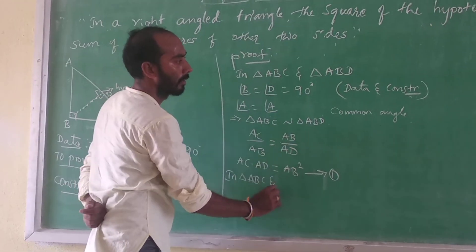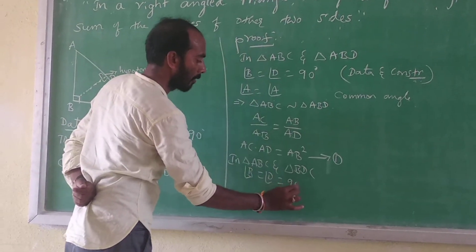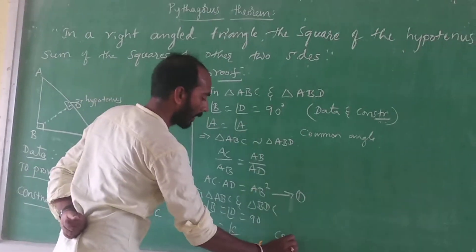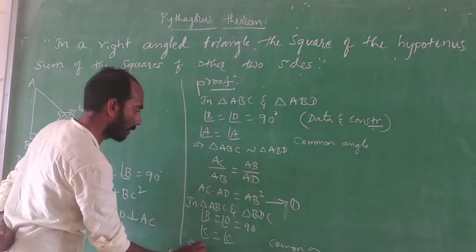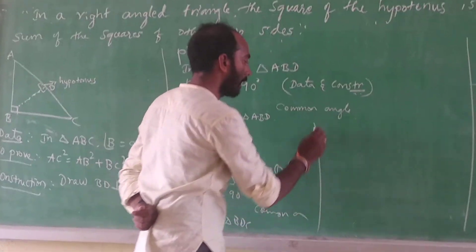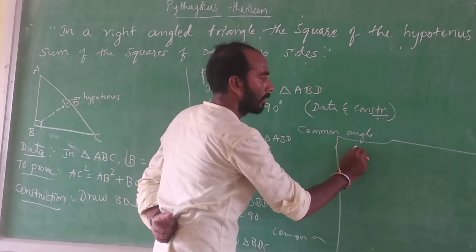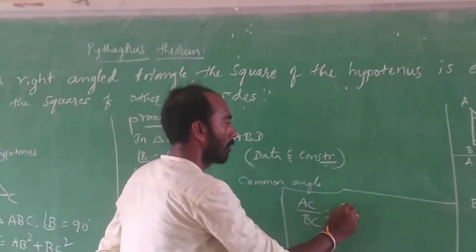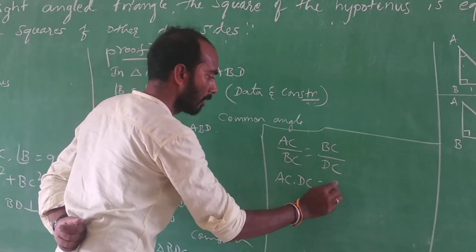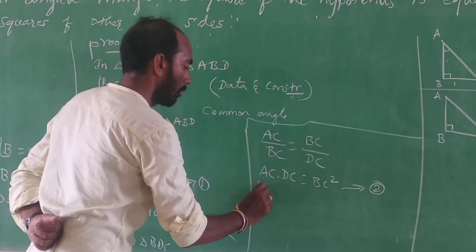Triangle ABC and triangle BDC — same. Angle B is equal to D, angle C is equal to angle C. That is the common angle. Triangle ABC is similar to triangle BDC. AC by BC is equal to BC by DC. Cross-multiplying: AC × DC = BC².